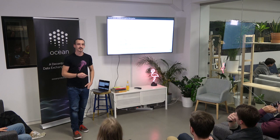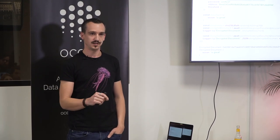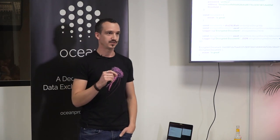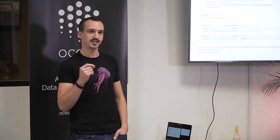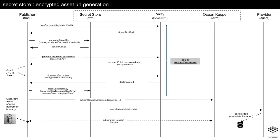Question: where is the encryption happening? The encryption is happening on your local machine. There is one parity node running on your local machine that gets the keys inserted and the data, and encrypts the document on your local machine. Not even the keys themselves, but the information to restore that key is stored in the secret store.